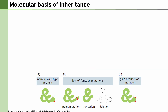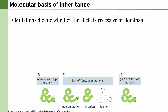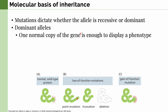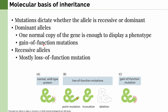Regarding the dominance of alleles, mutations dictate whether an allele is recessive or dominant. There are two types of mutations: loss-of-function mutations, where the gene is truncated or deleted and the protein's function is hampered; and gain-of-function mutations, where the protein's function is enhanced. Dominant alleles are usually genes where only one normal copy is needed to display a phenotype — typically gain-of-function mutations. Recessive alleles are mostly loss-of-function mutations, meaning both gene copies must lose function for the allele to be expressed.